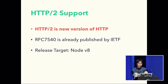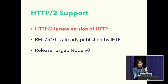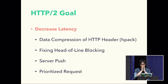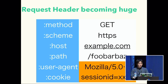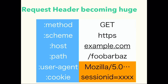HTTP/2 is a new version of HTTP. RFC 7540 is already published by IETF, and the HTTP/2 support release target is Node v8. HTTP/2's main goal is to decrease latency. It has many features focused on decreased latency: data compression, fixing head-of-line blocking, server push, prioritization of requests, et cetera. The request header is becoming so huge — the method, scheme, host, and path aren't huge, but the user agent, cookies, and custom headers are getting very long.